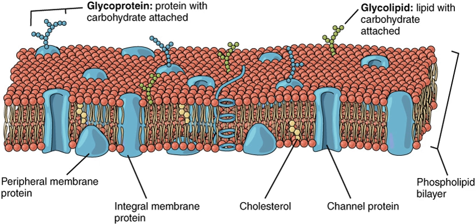Red blood cells, or erythrocytes, have a unique lipid composition. The bilayer of red blood cells is composed of cholesterol and phospholipids in equal proportions by weight. The erythrocyte membrane plays a crucial role in blood clotting. In the bilayer of red blood cells is phosphatidylserine, which is usually on the cytoplasmic side of the membrane. However, it is flipped to the outer membrane to be used during blood clotting.